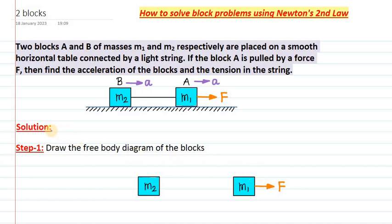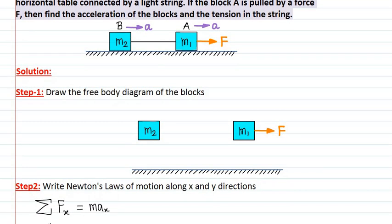Now let us start the solution of the problem. For any kinds of such problems in Newton's second law where blocks are connected, step number one is always to draw the free body diagram of the blocks. Here I have shown the two blocks M1 and M2 which are separated from each other. We are not showing the string which is in between them, and we have also separated them from the table surface.